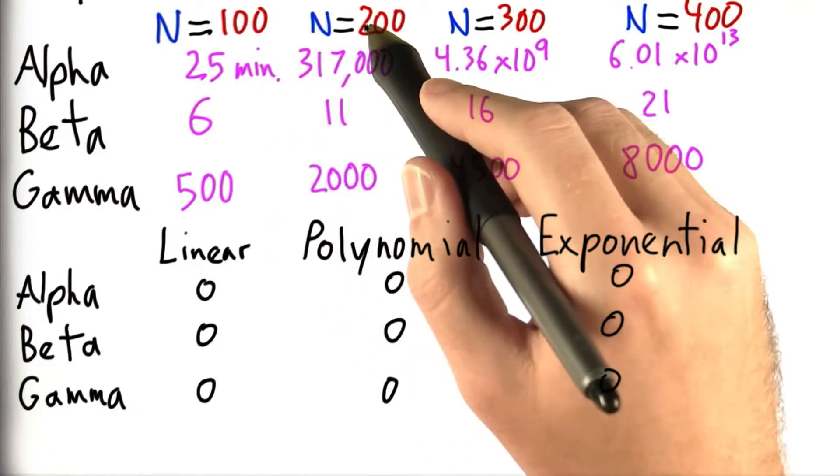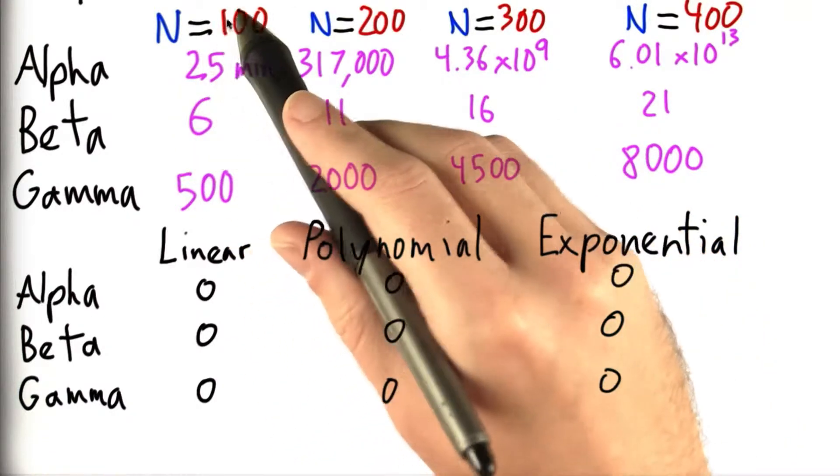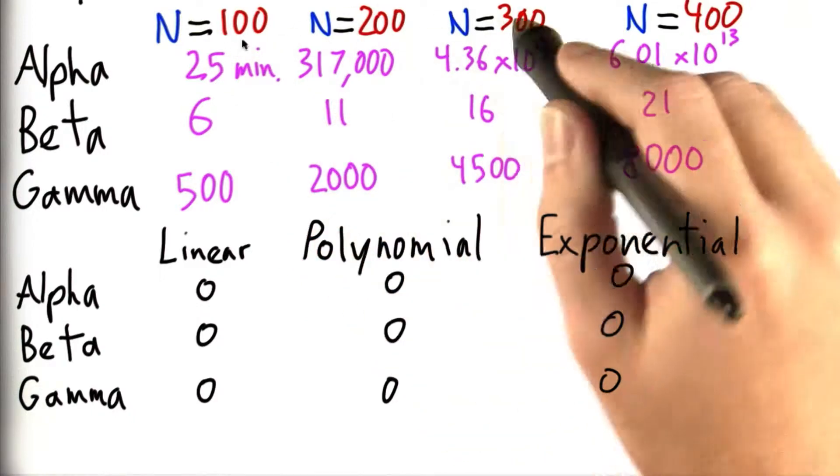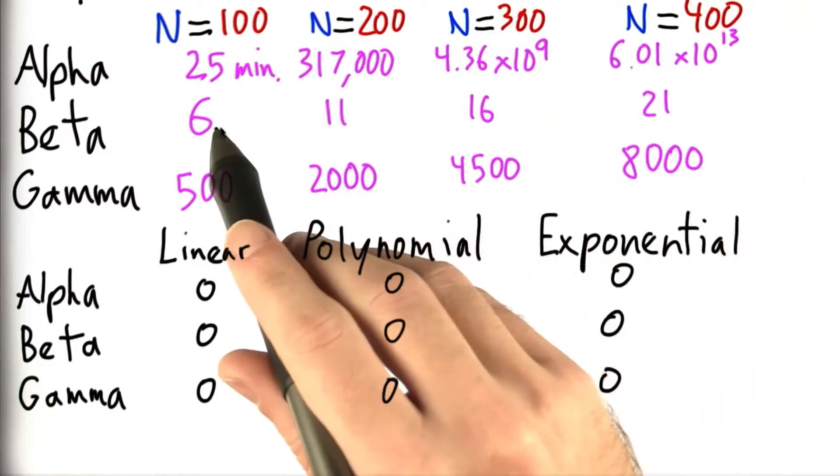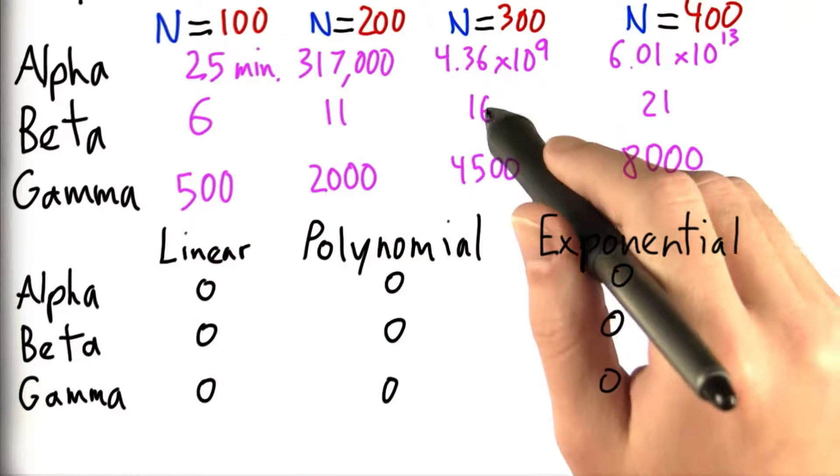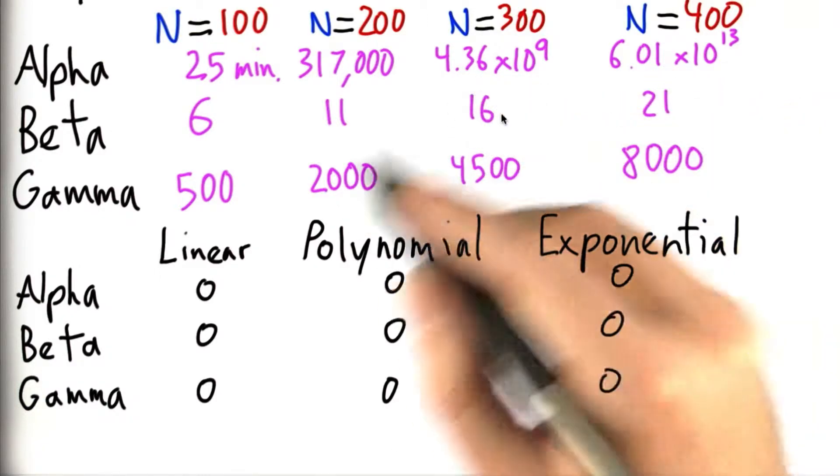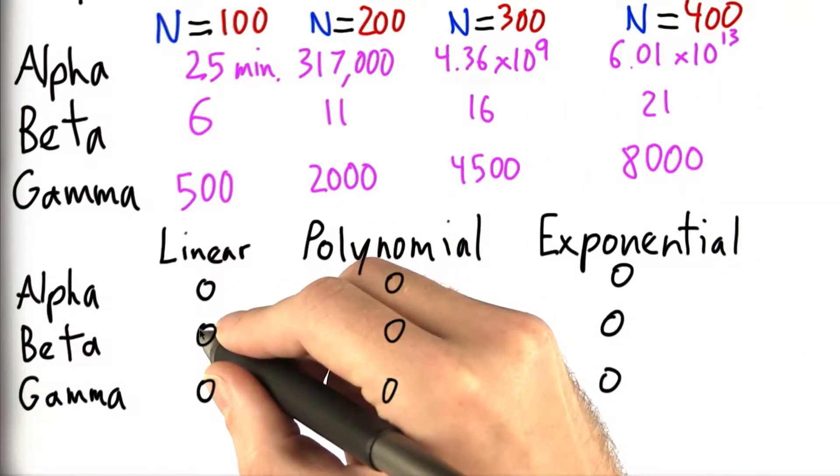So we double from 100 to 200, we roughly double. And as we triple from 100 to 300, well, we get roughly triple of the initial input size. 16 is pretty close to 18, so I'm going to go ahead and say that beta is linear.